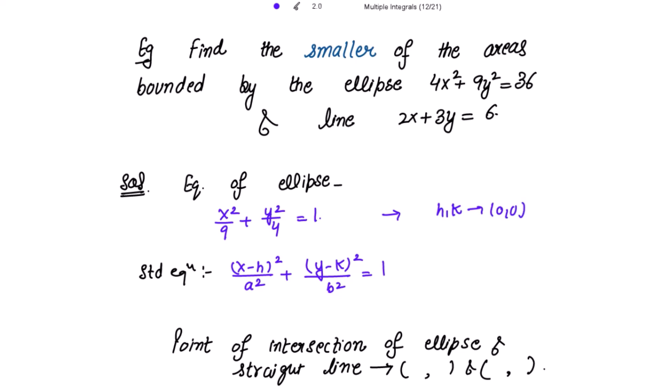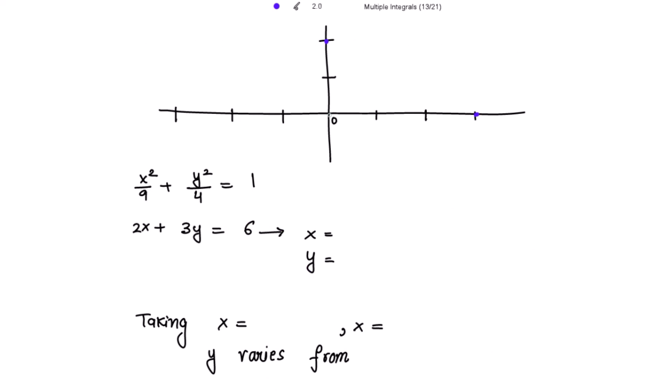To find the points of intersection of the ellipse and the straight line, we first sketch the region. Since h and k are (0, 0), the center of the ellipse is at the origin. Putting y = 0 gives x = 3, so the point is (3, 0). Putting x = 0 gives y = 2, so the point is (0, 2).